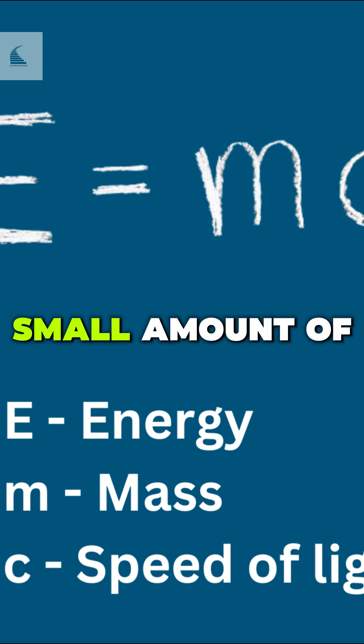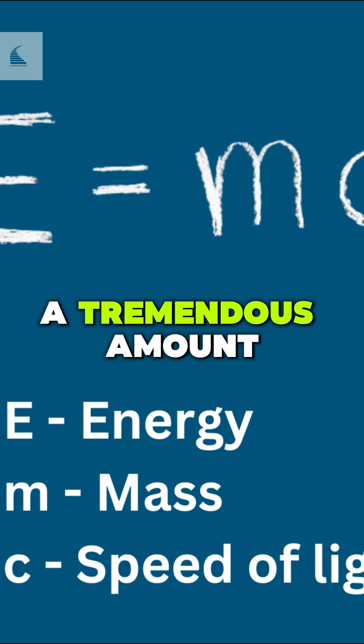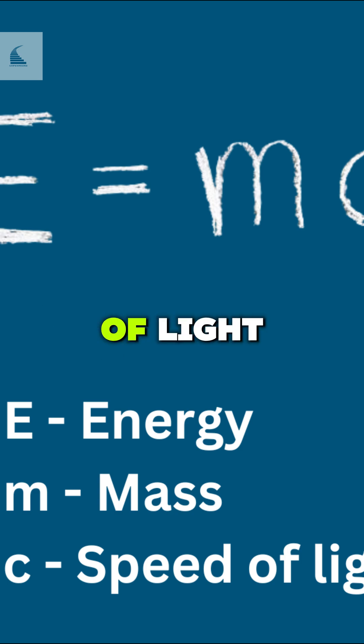The equation tells us that a small amount of mass can be converted into a tremendous amount of energy because the speed of light squared is such a large number.